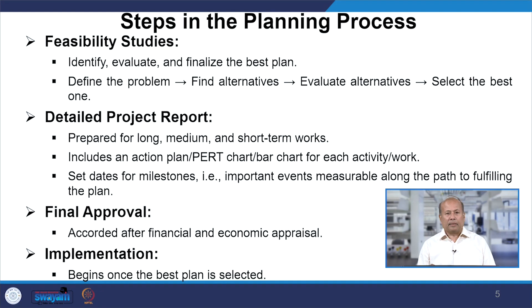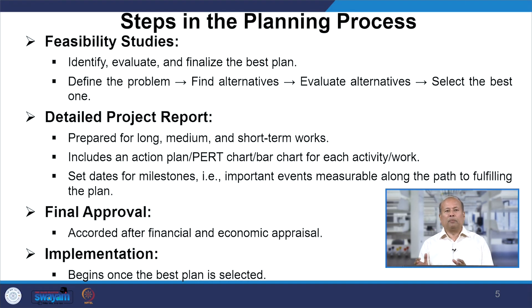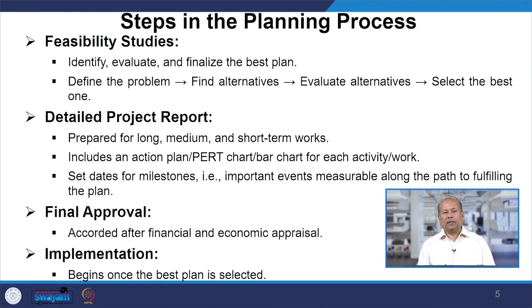Feasibility studies identify, evaluate and finalize the best plan. You need to define the problem, find alternatives and options, evaluate those alternatives and select the best one. Then prepare a project report for long, medium and short-term works, include a Gantt chart or bar chart for each activity, and set different milestones to complete assignments from time to time. Finally, all distribution companies need to get approval from their own organization — both financial and economic appraisals — as well as regulatory approval from the state regulatory commissions, and then implement.